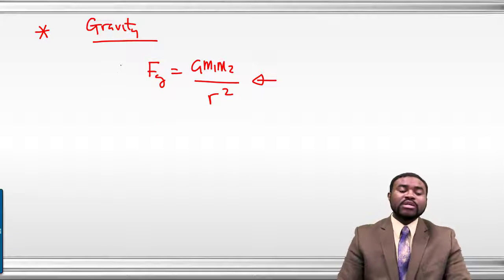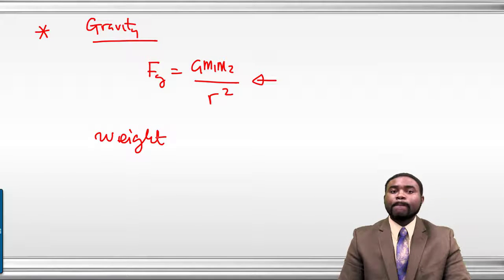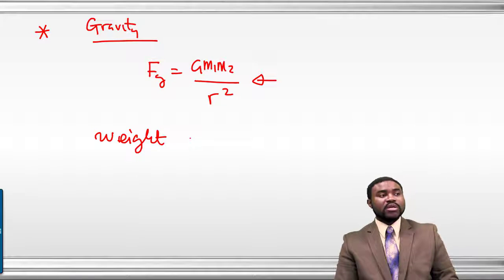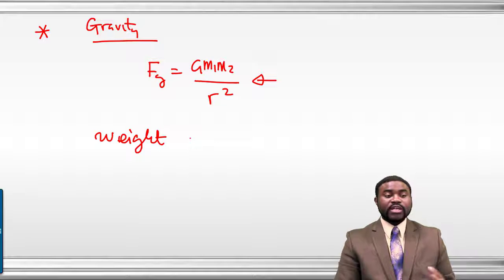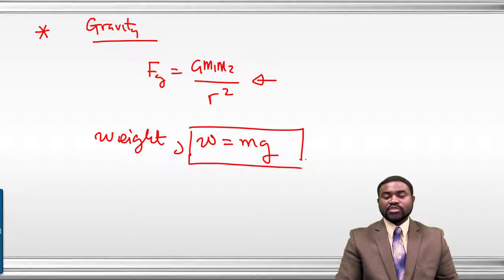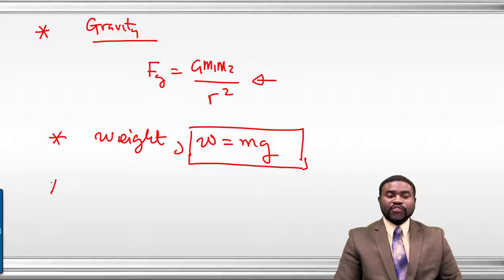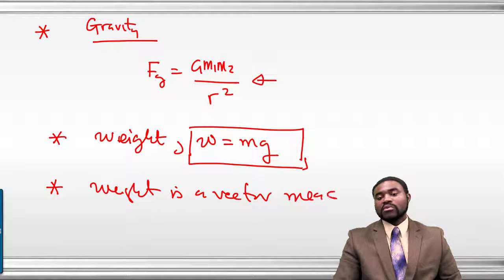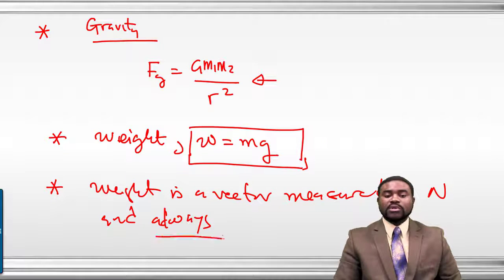We talked about how this law can be applied, and specifically we talked about weight. Weight is the gravitational pull of a planet on any object. Now we are on earth, which means that the weight of an object on earth is the gravitational pull of the earth on that object. The weight of an object is just the mass multiplied by the acceleration due to gravity. Weight is a vector, measured in Newtons, and always acts vertically downwards.